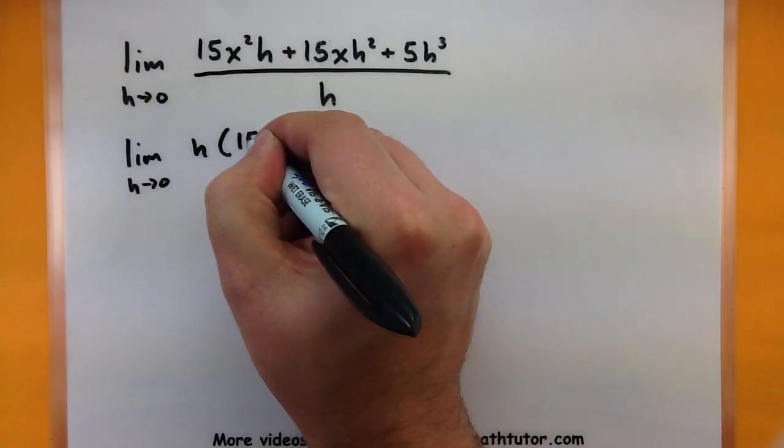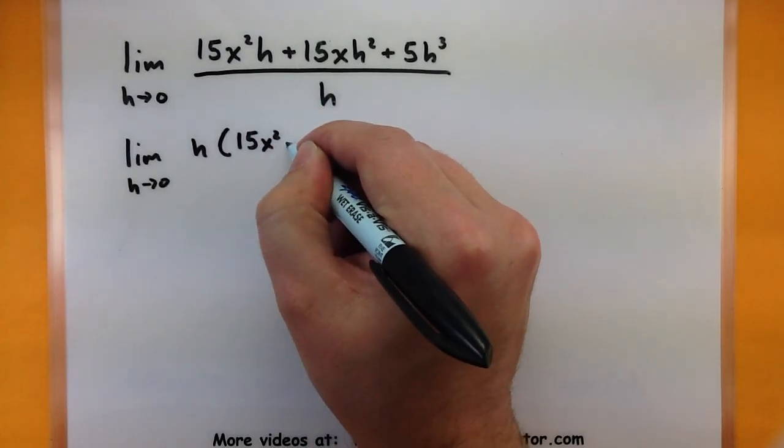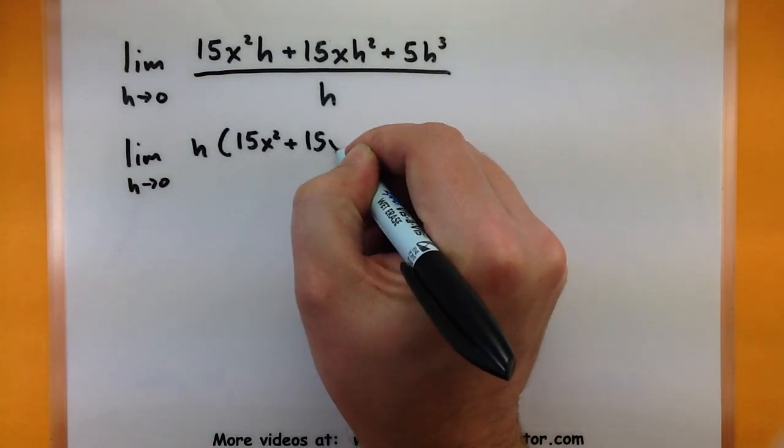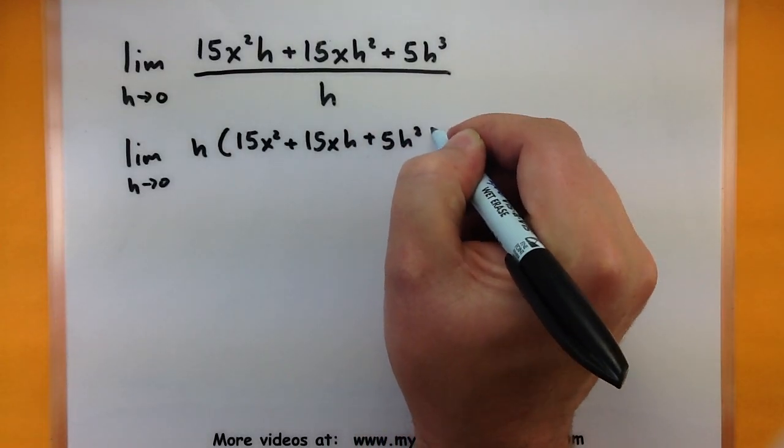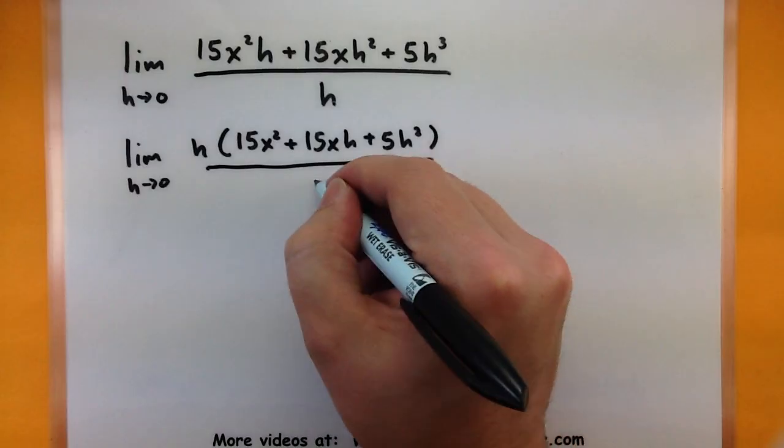Let's borrow an h from everyone in the top: 15x squared plus 15x h plus 5h squared all over h.